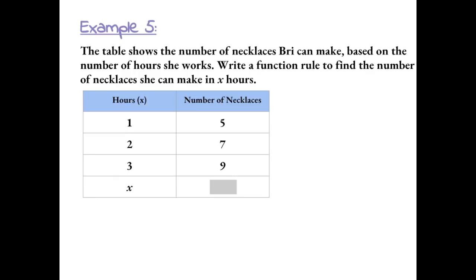Example 5: The table shows the number of necklaces Brie can make based on the number of hours she works. Write a function rule to find the number of necklaces she can make in x hours. First, we look for a pattern from input to output. To get from an input of 1 to an output of 5, we could add 4 or multiply by 5. But checking with input 2: 2 plus 4 gives 6, not 7; and 2 times 5 gives 10, not 7. So neither rule works for every input and output.